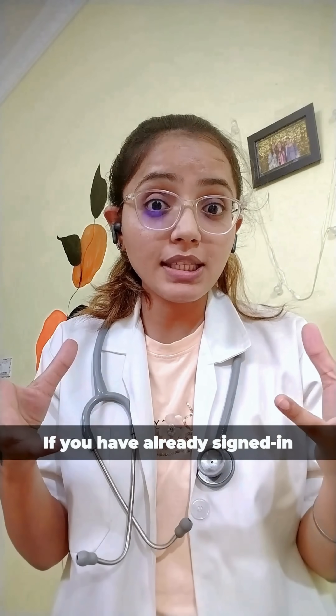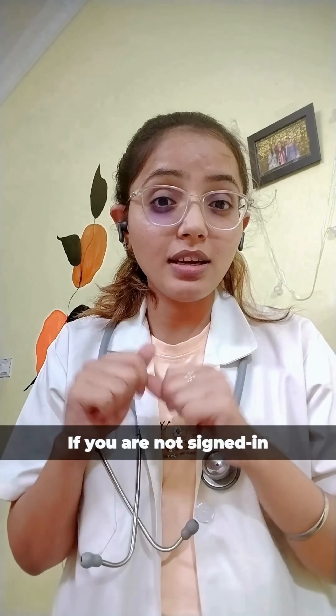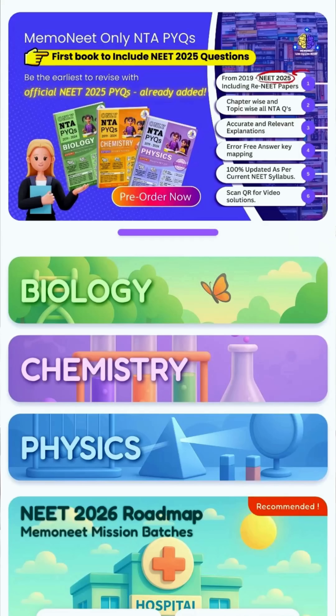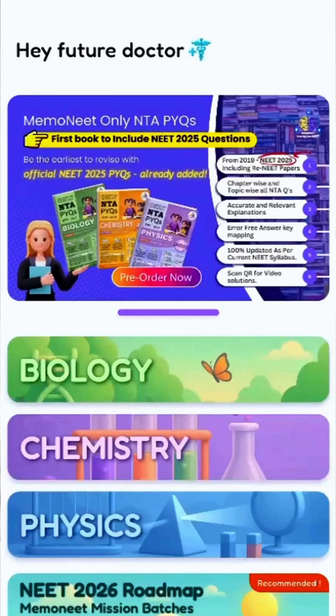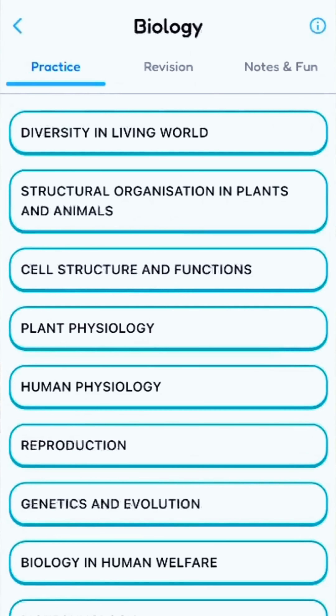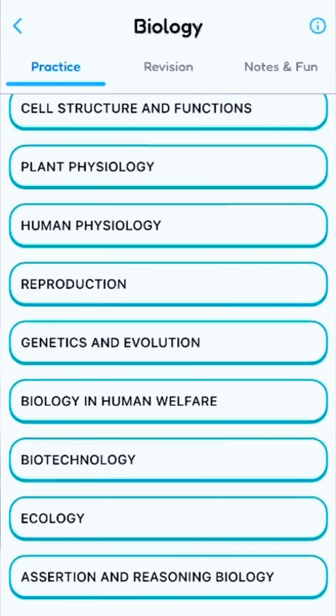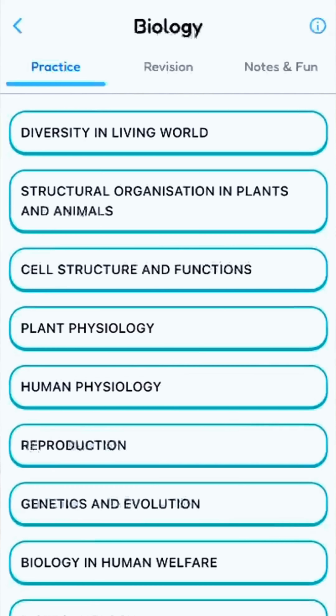Now if you are already signed in, great. If you have not signed in, sign in. Once you sign in to the MemoNate application, you will see three pop-ups: Biology, Chemistry, and Physics. Now click on Biology. Can you see all the names of the chapters and all the names of the units we have in our NEET popping up?